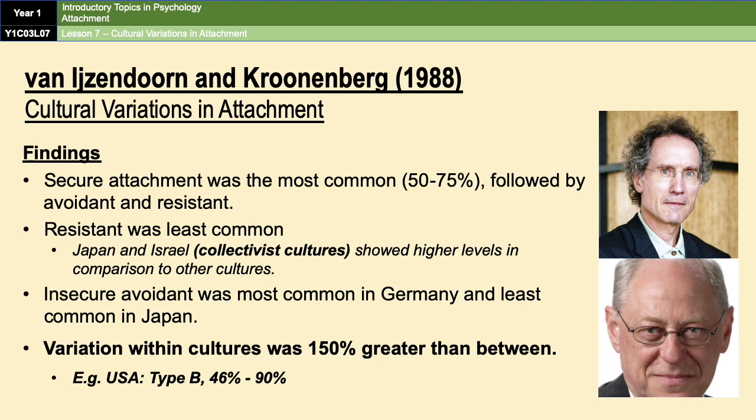Something else they found was that the variation within cultures was 150% greater than the variation between cultures. For example, in America there was a massive variation of securely attached infants: one study found 90% of infants were securely attached, while another study also conducted in America found only 46% were securely attached. So there is a huge variation within cultures as well.